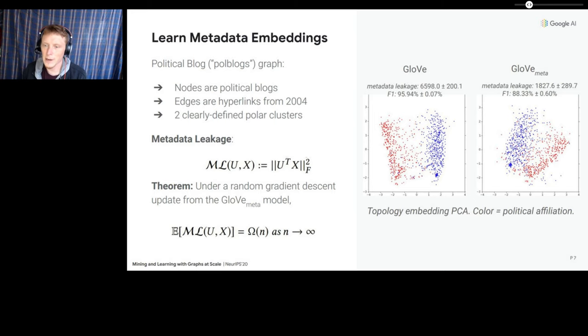Then we applied the GloVe model again, but as shown in the last slide, we concurrently trained a separable metadata embedding space. We found that the remaining topology embeddings still clustered by political affiliation, but somewhat less strongly. So this partially confirmed our original hypothesis about the effect of learning metadata embeddings. However, as I just mentioned, the classifier was still able to predict political affiliation from the topology embeddings with 88% F1.